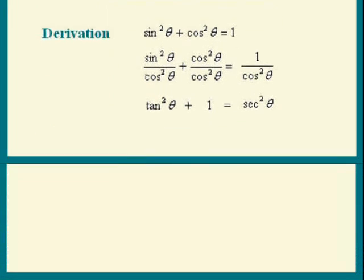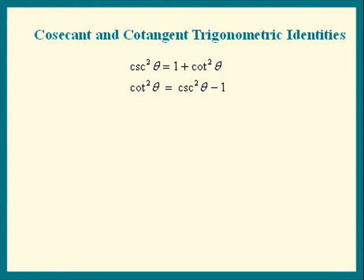Next, we'll look at two identities related to cotangent and cosecant. We rarely use these, definitely not enough to memorize them. So make sure you remember how to derive them, and you'll be all set.